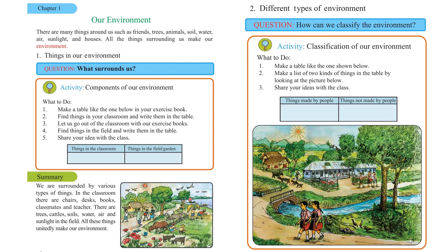From this we can see there are two kinds of environment: one is the man-made environment, and another is the natural environment. So in these two pages we have learned what our environment is — how it is created — and we have seen its classification: the environment is divided into two parts, man-made and natural.